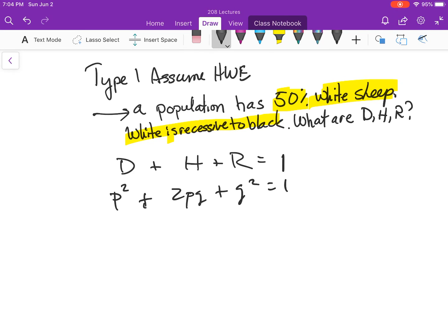What are D, H, and R? What we know is that there are 50% white sheep, and we know those white sheep must be this group here. So R is equal to 0.50.